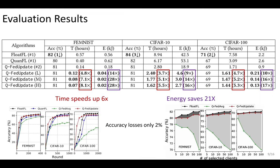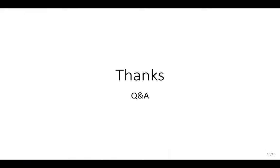Our evaluation shows that QPAD accelerates the training process by 6 times and reduces energy consumption by 21 times compared to traditional CPU-based methods, with only a 2% loss in accuracy. That's all, thanks for your attention.